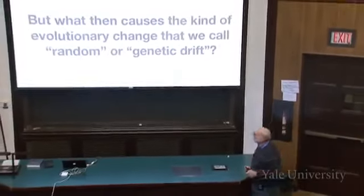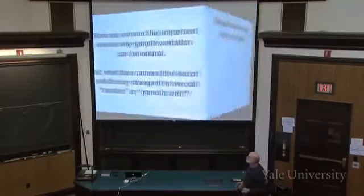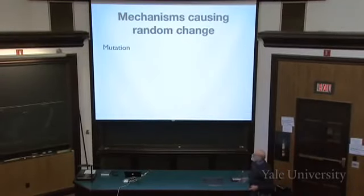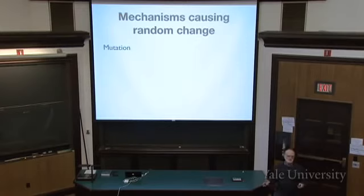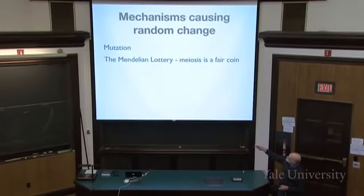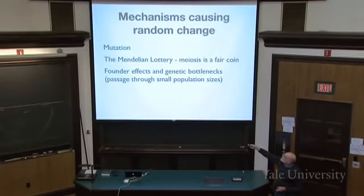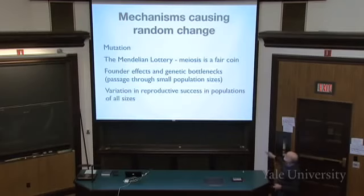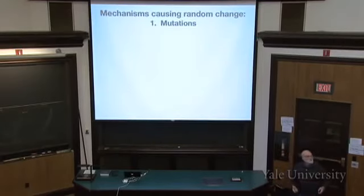What causes random change or genetic drift? These are the mechanisms that can introduce randomness into evolution. The first is mutation, the second is the Mendelian lottery — the idea that meiosis is like a fair coin — and then there are population-level effects. Mutation is a molecular event; the Mendelian lottery is a cellular event; founder effects and genetic bottlenecks are population effects; and variation in reproductive success is a demographic effect. All of these contribute to random change.